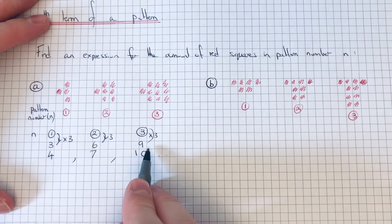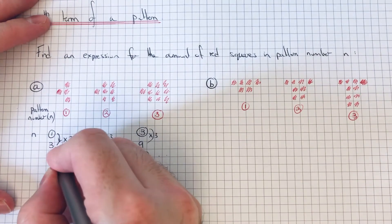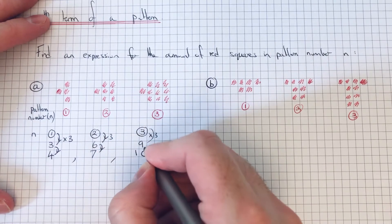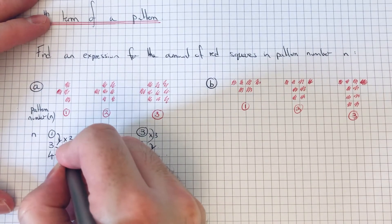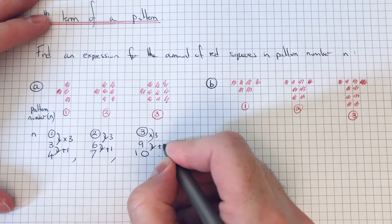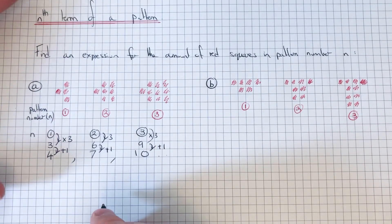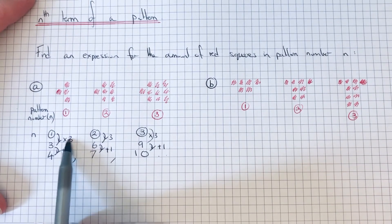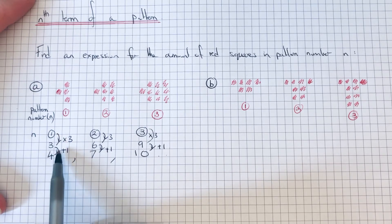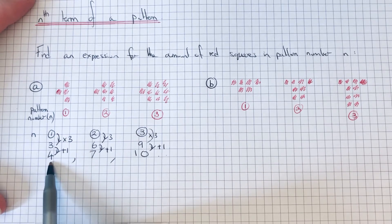Then what do we do to these 3 times tables to give us the numbers in the sequence? It looks like we just need to add 1 to our multiples of 3. So we've multiplied the number at the top, the pattern number, by 3 and we've added on 1, and it gives you the number in the sequence.